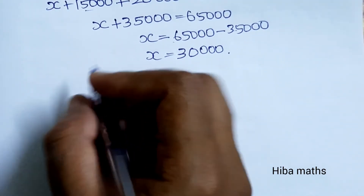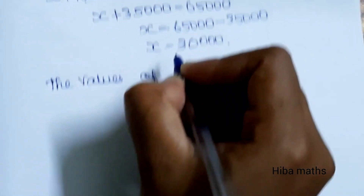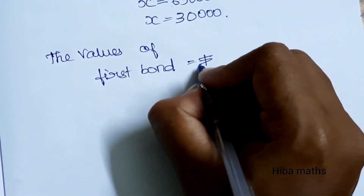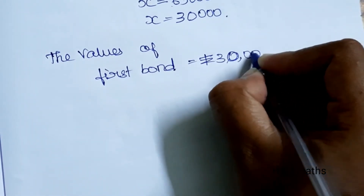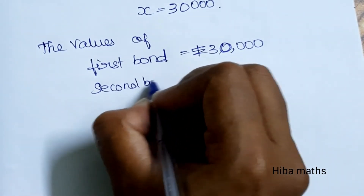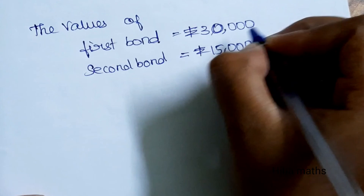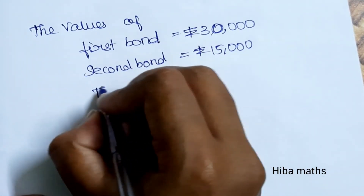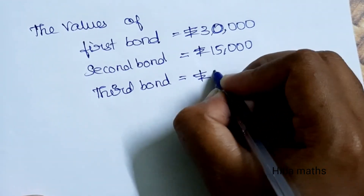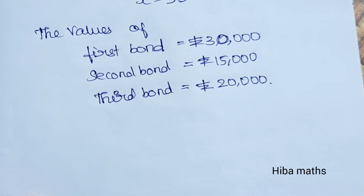Therefore, the values invested in each bond are: first bond x = ₹30,000; second bond y = ₹15,000; third bond z = ₹20,000. Thank you so much for watching.